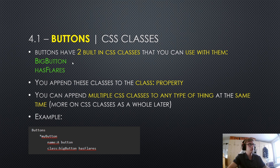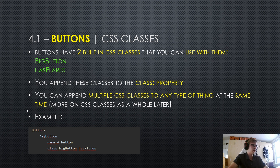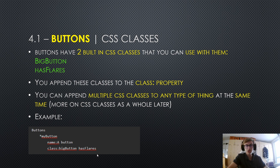Buttons have two built-in CSS classes that you can use with them: the big button class and the has flares class. You append these classes to the class property, and you can append multiple CSS classes to any type of thing at the same time. I also provided an example — here we have the button section and a button, with the class property using two classes at the same time. You just separate multiple classes with a space in the class property.